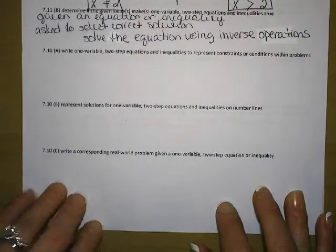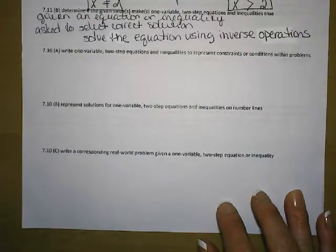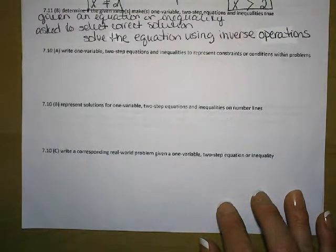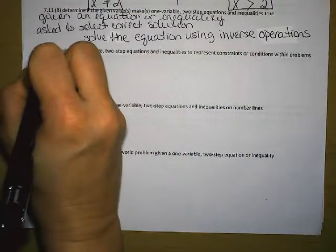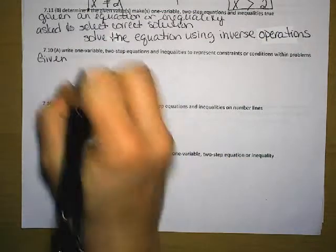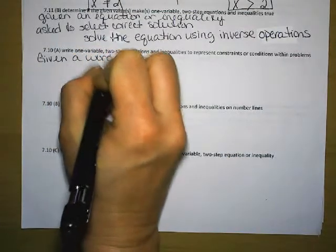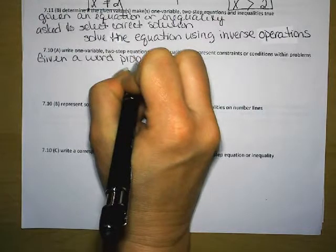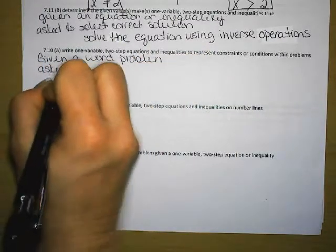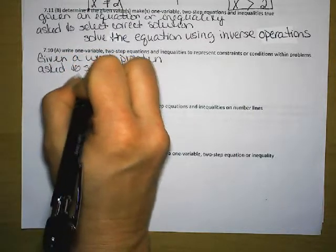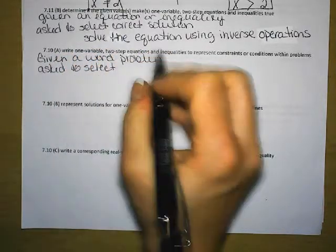7.10a is where you write one variable two-step equations and inequalities to represent constraints or conditions within problems. Often times this is where you are given a word problem. And you will be asked to select the matching equation.